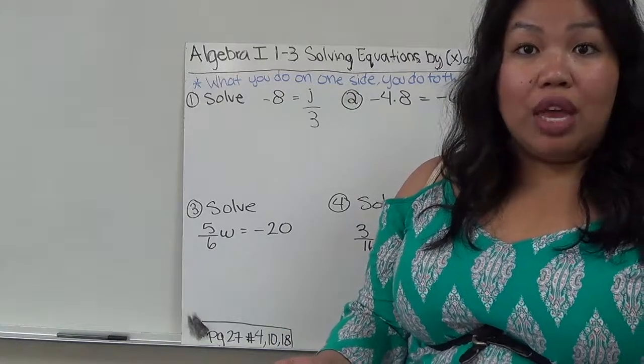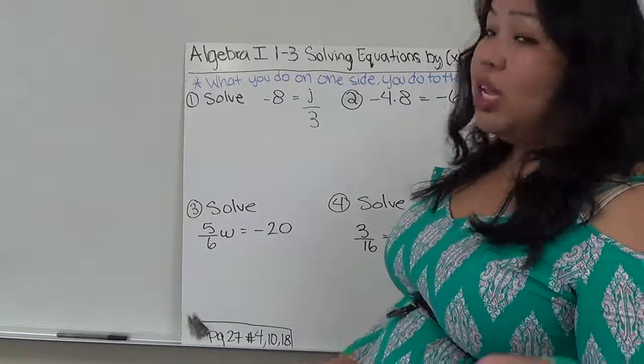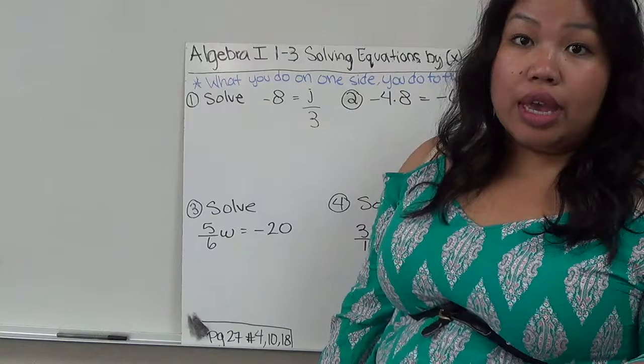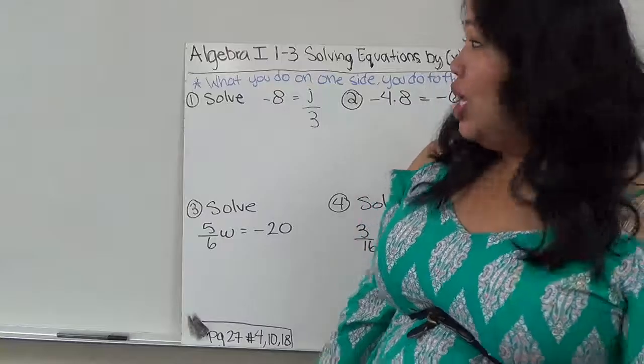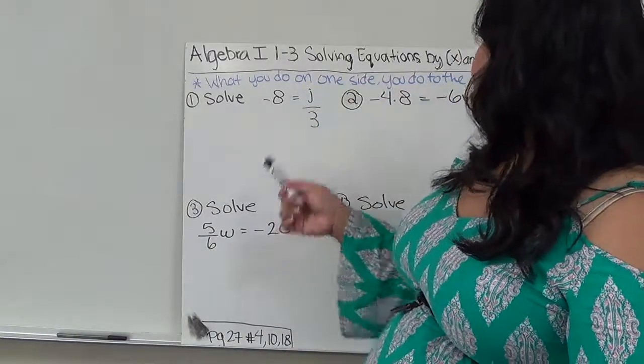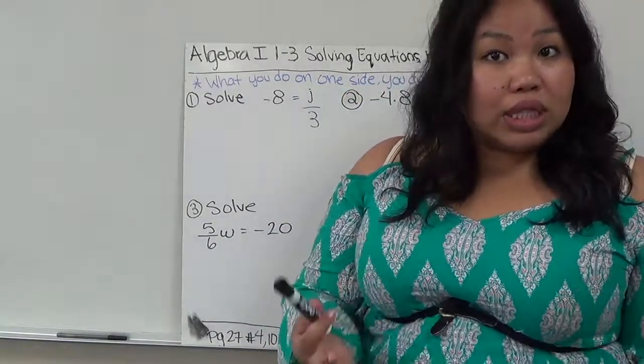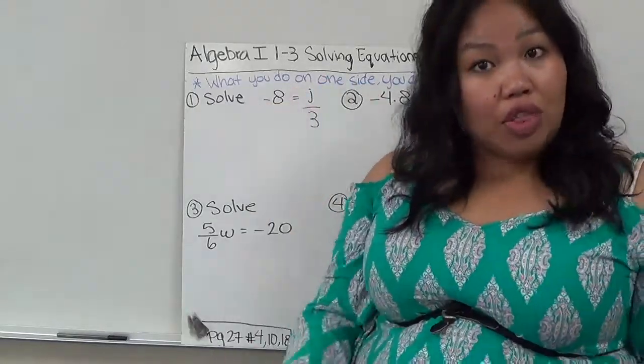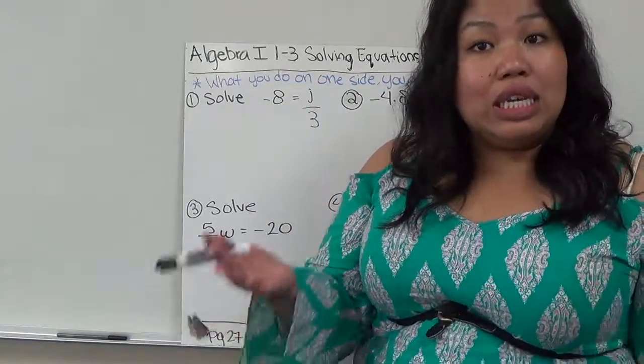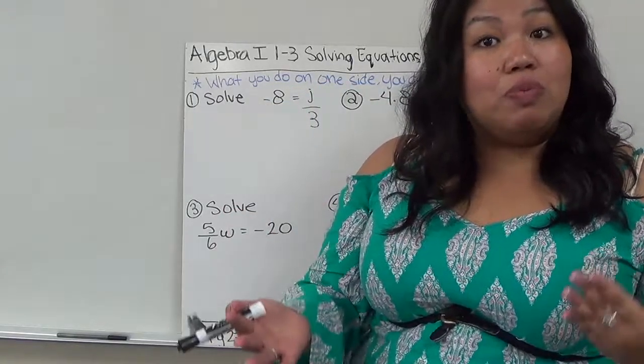But the rules still apply. We're isolating the variables, so we're getting the variables by themselves. And we have to do the opposite in order to get rid of it. But most importantly, our chant is what you do to one side, you have to do to the other. What you do to one side of the equal sign, you have to do to the other side of the equal sign to keep things balanced, because we can't just have things disappear.